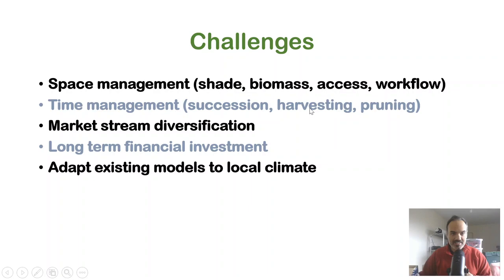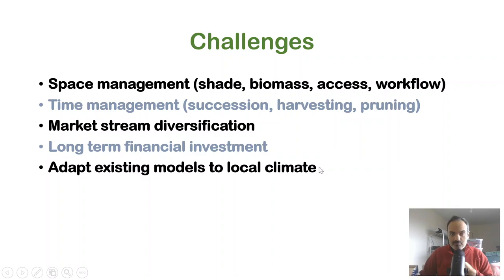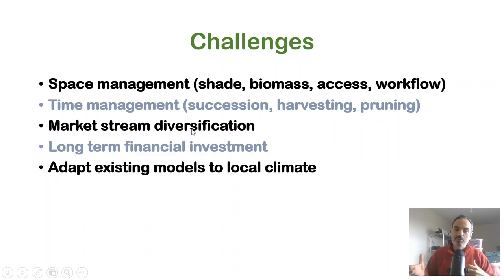Time management is another challenge: we must be aware of succession dynamics as trees grow bigger and roots grow longer. This won't run on an annual basis restarting from scratch — in a regenerative system the soil and conditions get better biologically and ecologically, and much faster with trees than with annual production. Then there's market stream diversification — no point having extra crops of fruits, plants, roots, and biomass if we have no market or use for them — and the long-term financial investment in buying, planting, pruning, and tending perennial plants that won't give a harvest until years after implementation.